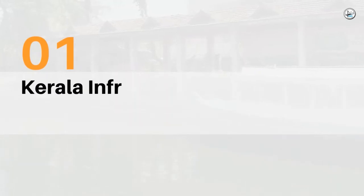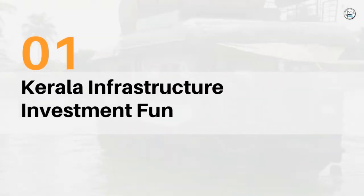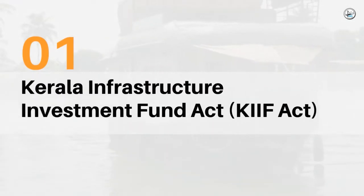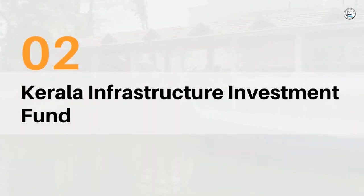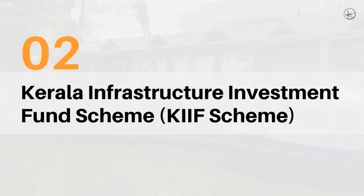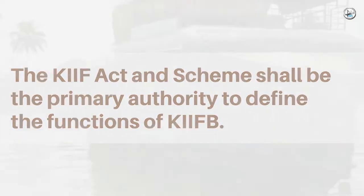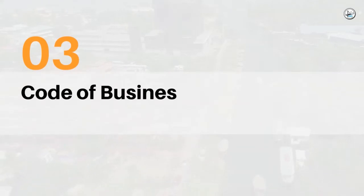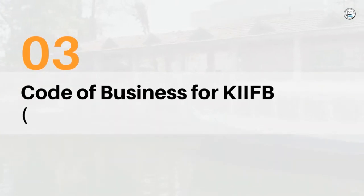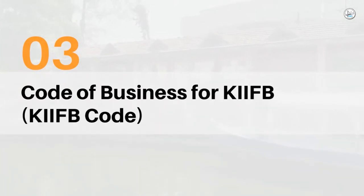The Hierarchy of Authority shall be in the order as given below. 1. Kerala Infrastructure Investment Fund Act, KIF Act. 2. Kerala Infrastructure Investment Fund Scheme, KIF Scheme. They are the primary authority to define the functions of KIF-B. 3. Code of Business for KIF-B, KIF-B Code.